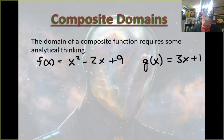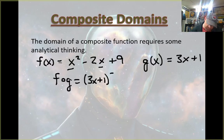Okay, I'm doing this example because there's two different x's in that case that you have to plug into. So you're going to have (3x + 1)² minus two times (3x + 1) plus nine.